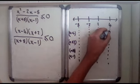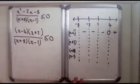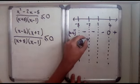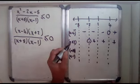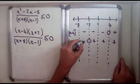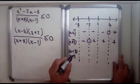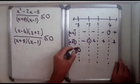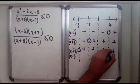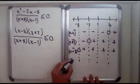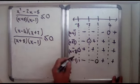x-4 is 0 at x=4; when x is bigger than 4 this is positive, and everywhere else it's negative. x+2 zeros at minus 2, so when x is bigger than minus 2 it's positive, and when x is smaller than minus 2 it's negative. x+8 zeros at minus 8, so anything smaller than minus 8 is negative, and anything bigger is positive. x-1 zeros at 1, so anything smaller than 1 is negative, and anything bigger is positive.